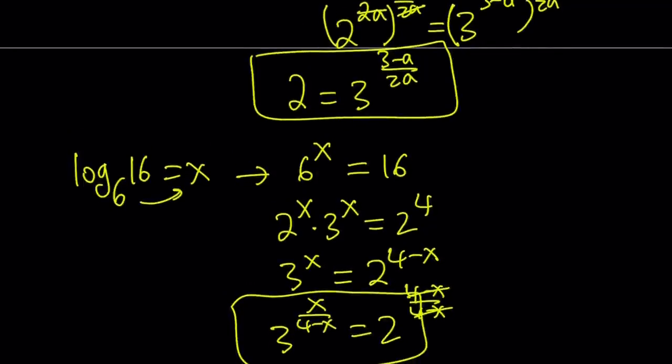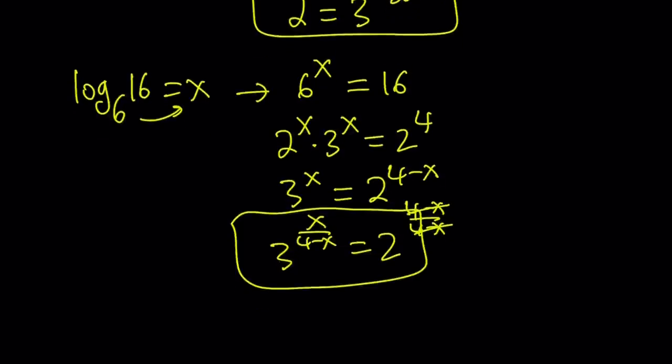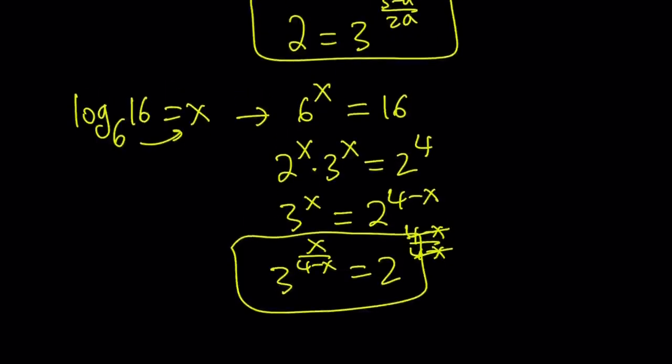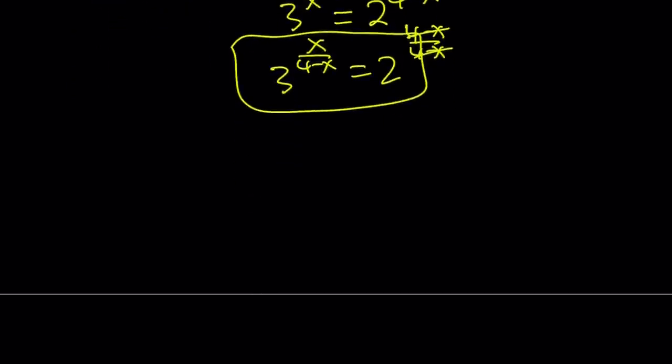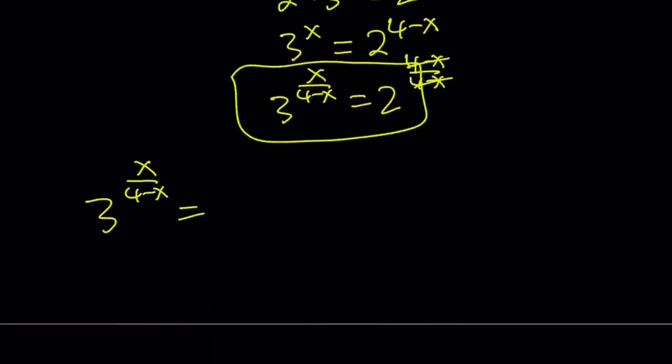If two things are equal to the same thing, then they're equal. Hopefully you know that principle—transitive property or something like that. Now we're going to set those equal to each other, and since our goal is to find X, even though it doesn't matter, I'd like to keep the X on the left-hand side. So 3^(X/(4-X)) equals 2, which is also equal to 3^((3-A)/(2A)). Awesome. Now we've got the same bases, which is good, because now we can equate the exponents.